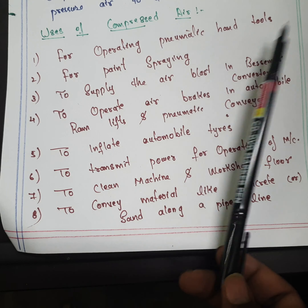Also for ram lifts and pneumatic conveyors — a pneumatic conveyor uses air as the input to convey material from one place to another. Fifth: to inflate automobile tires, since normal air pressure is insufficient to fill a tire, so a compressor is used. Sixth: to transmit power for operating machine tools.